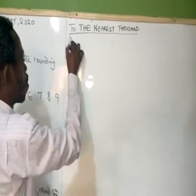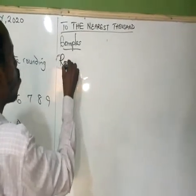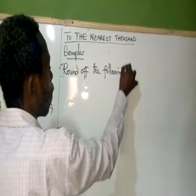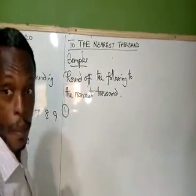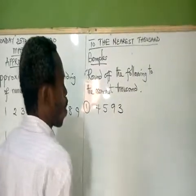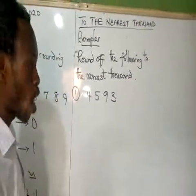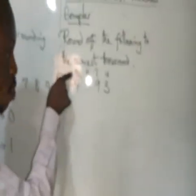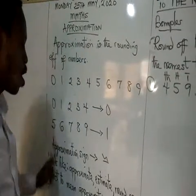Let's consider some examples of rounding to the nearest thousand. If we are to round off this number, using place value — you know your place value quite alright — this digit is units, this is tens, this is hundreds, and this is thousands. Because we are rounding off to the nearest thousand, we approximate the value that is closest to this thousand place, which is the hundreds digit. And what number is that? Five.